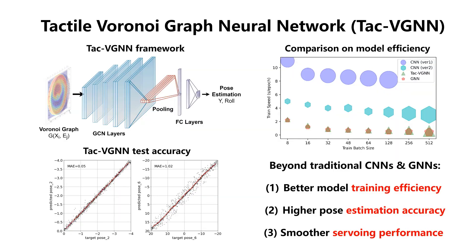A graph convolutional network is introduced for feature extraction, whose input is the Voronoi graph generated in the last step. The model output consists of predictions for vertical movement along the y-axis and the rotation angle along the z-axis. It outperforms traditional CNNs and GNNs with better model training efficiency, higher pose estimation accuracy, and smoother servoing performance.